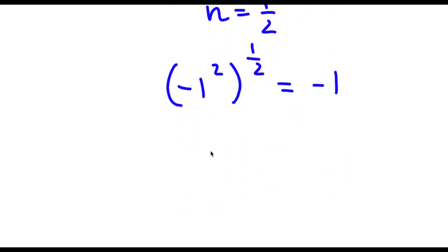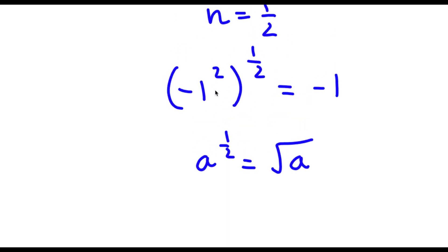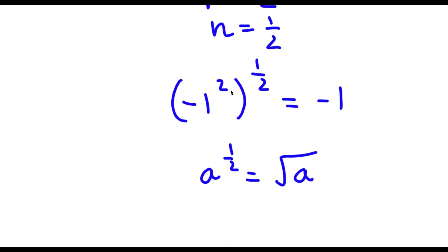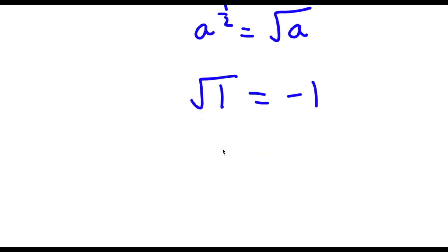Now, if I have something in the form a to the power of one-half, this is the same thing as the square root of a. So first off, negative 1 squared is simply equal to 1. So now I have the square root of 1 is equal to negative 1. And the square root of 1 is simply equal to 1, so now I have 1 is equal to negative 1.